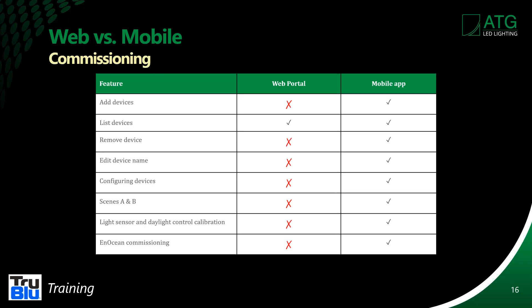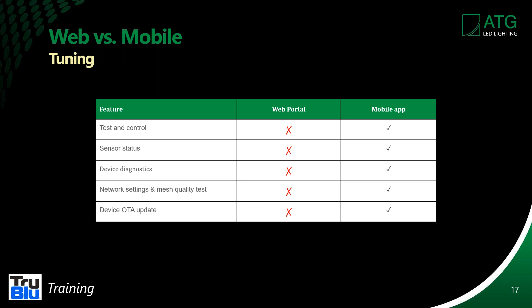In the commissioning phase, since you really have to have a mobile device at the job site to commission it, most if not all of the commissioning is done by way of the app. The only thing you can do in the commissioning process via the portal is list the devices before you get there. Tuning is some fine tuning at the job site by the person commissioning — typically an installer, or somebody at the agency appointed as the go-to person.